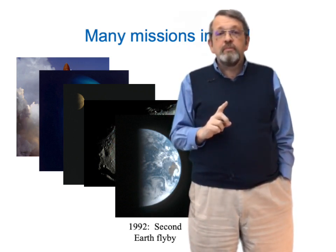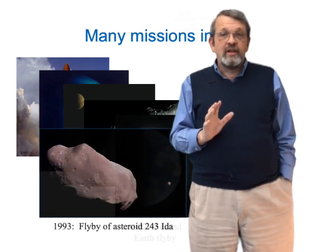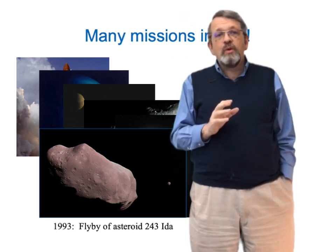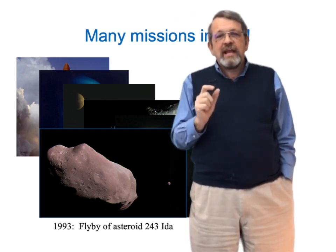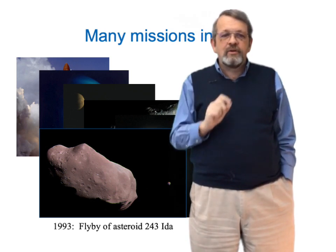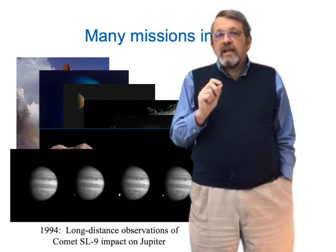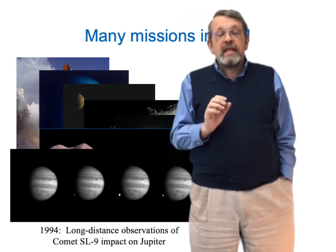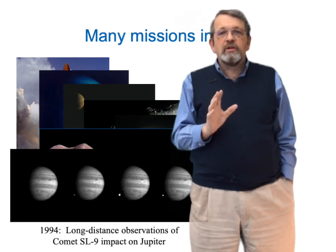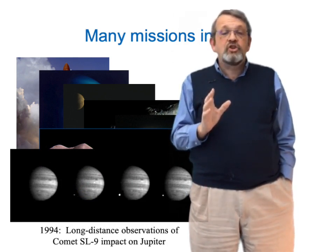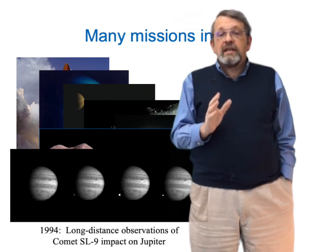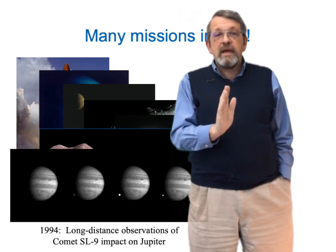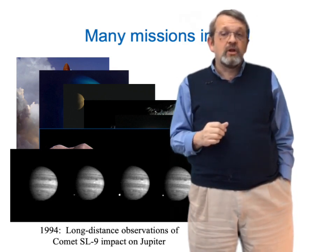But along the way to Jupiter, it flew past an even larger asteroid, the asteroid 243 Ida — along with its moon, a moon of an asteroid, the tiny Dactyl, only a kilometer across. In 1994, still tens of millions of kilometers away from Jupiter, it made distant observations of a remarkable event: the impact of the comet Shoemaker-Levy 9 on Jupiter. Galileo was in a slightly different place than the Earth, and so it could make observations that would not have been possible with Earth-based telescopes.